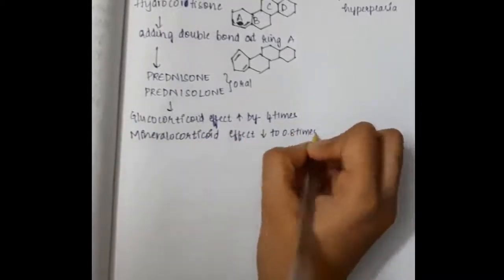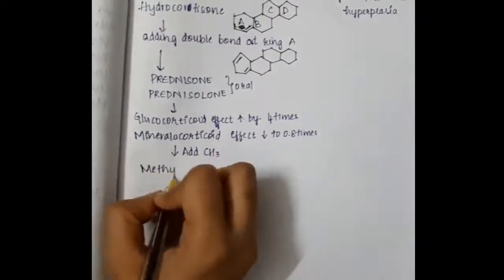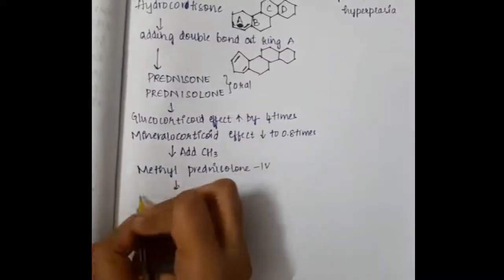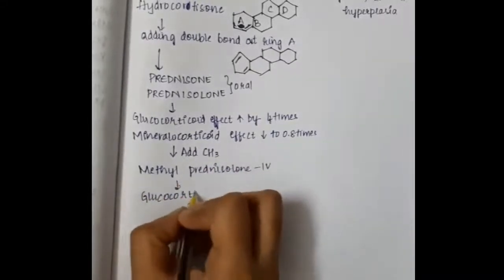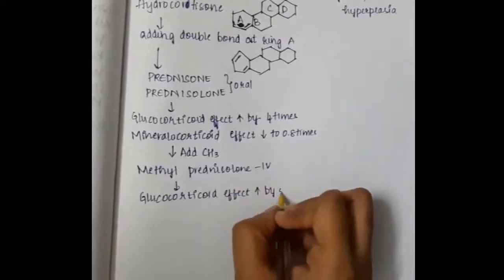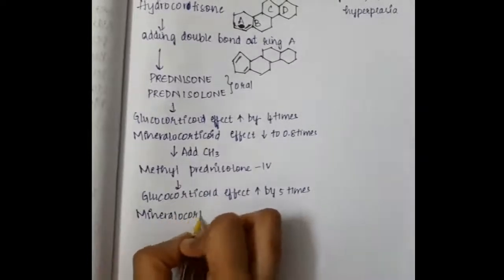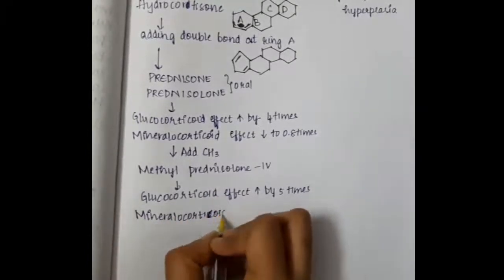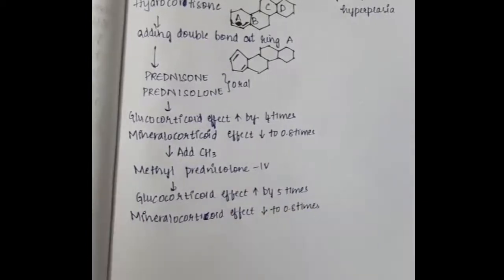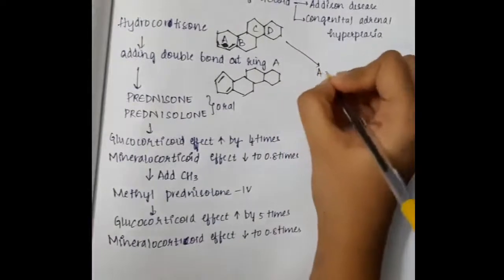If we add a methyl group to prednisolone, it forms methylprednisolone, which is an IV drug. In methylprednisolone, the glucocorticoid effect increases by five times and the mineralocorticoid effect decreases by 0.8 times.